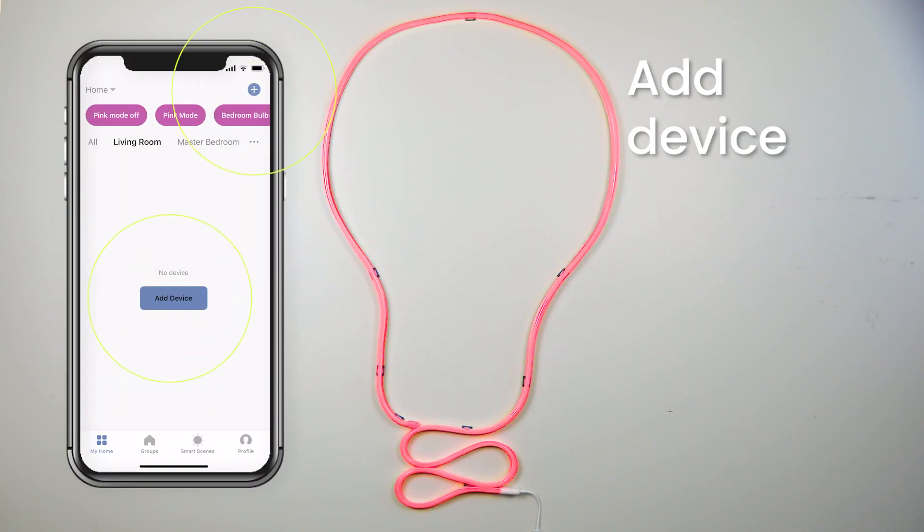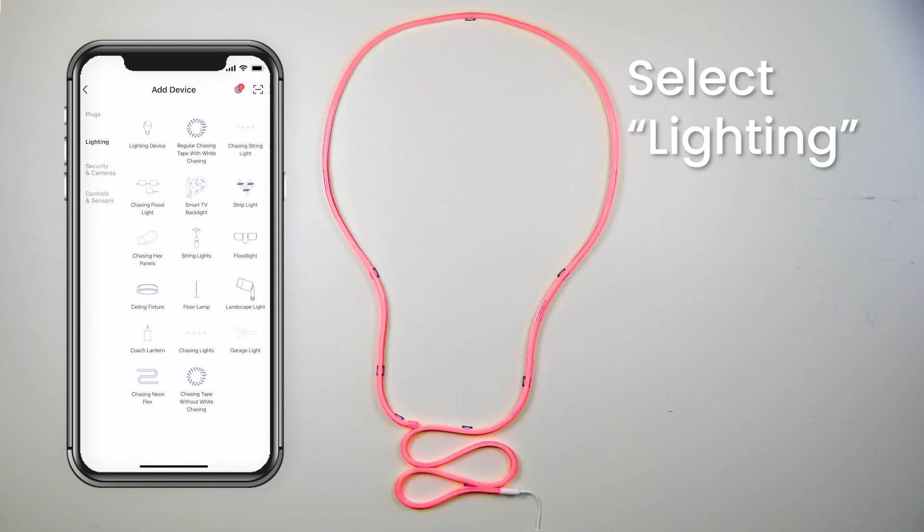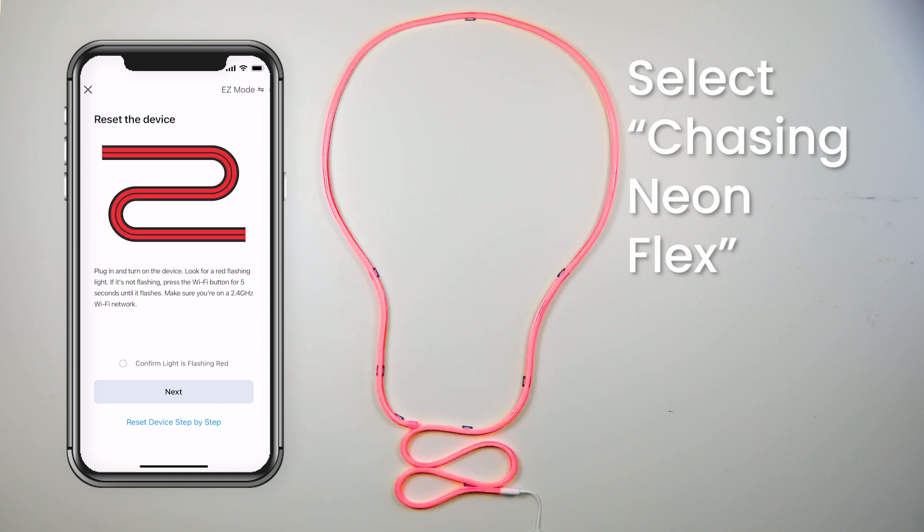Tap to add a device and select lighting. Select chasing NeonFlex, then confirm that the lights are in pairing mode.